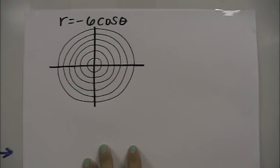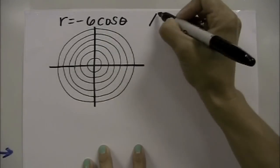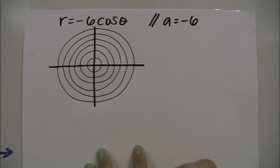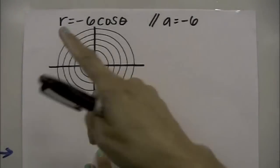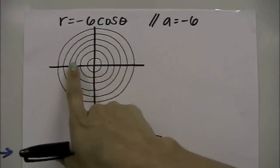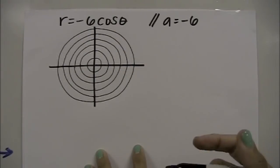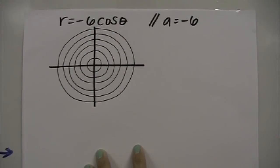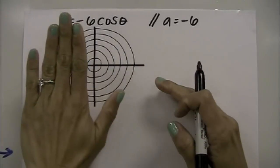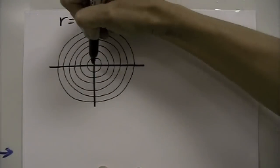For the equation r equals negative 6·cosine(θ), a equals negative 6. Since it's a cosine equation, the graph is going to be along the x-axis — it's still in the form r = a·cosine(θ), so it will be a circle. Since a is negative 6, I know it's going to fall on the left side of the y-axis.